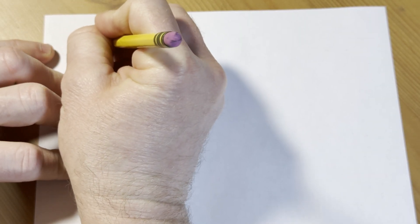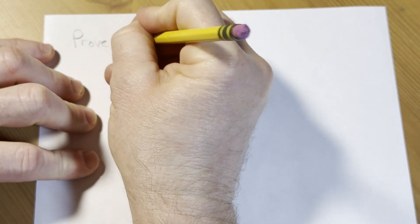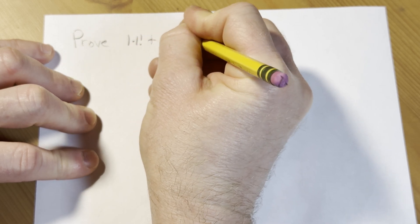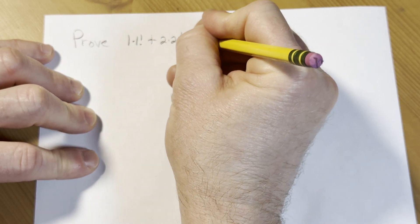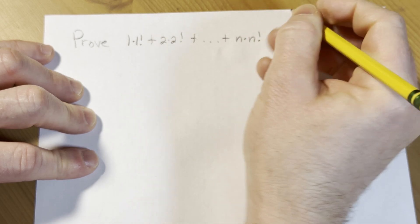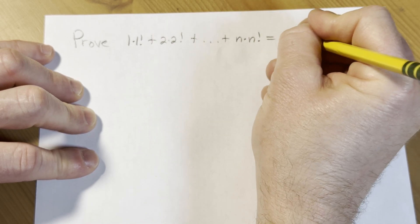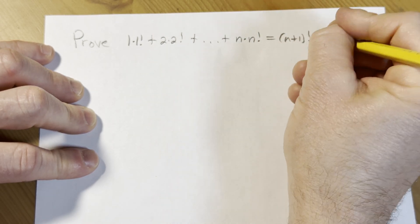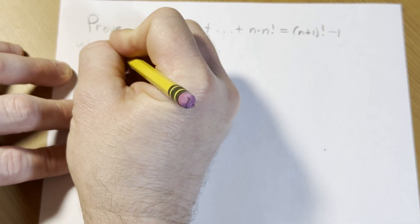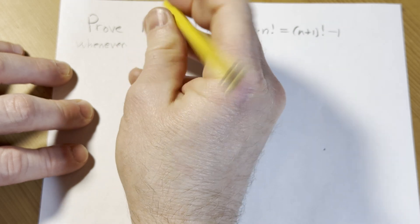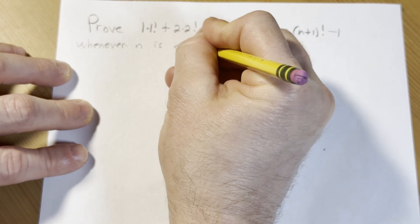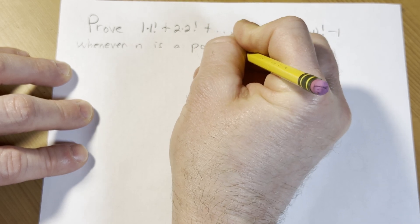So the question is to prove, okay, we're going to prove that 1 times 1 factorial plus 2 times 2 factorial plus dot dot dot plus n times n factorial is equal to n plus 1 factorial minus 1, okay, whenever n is a positive integer.